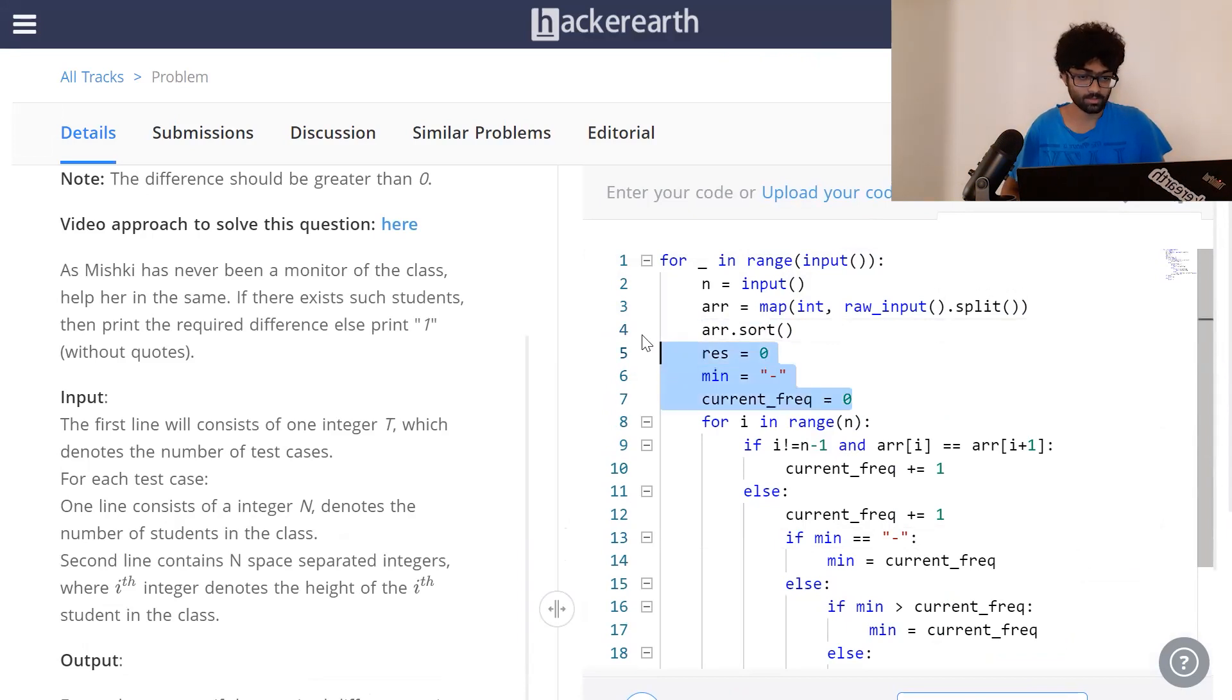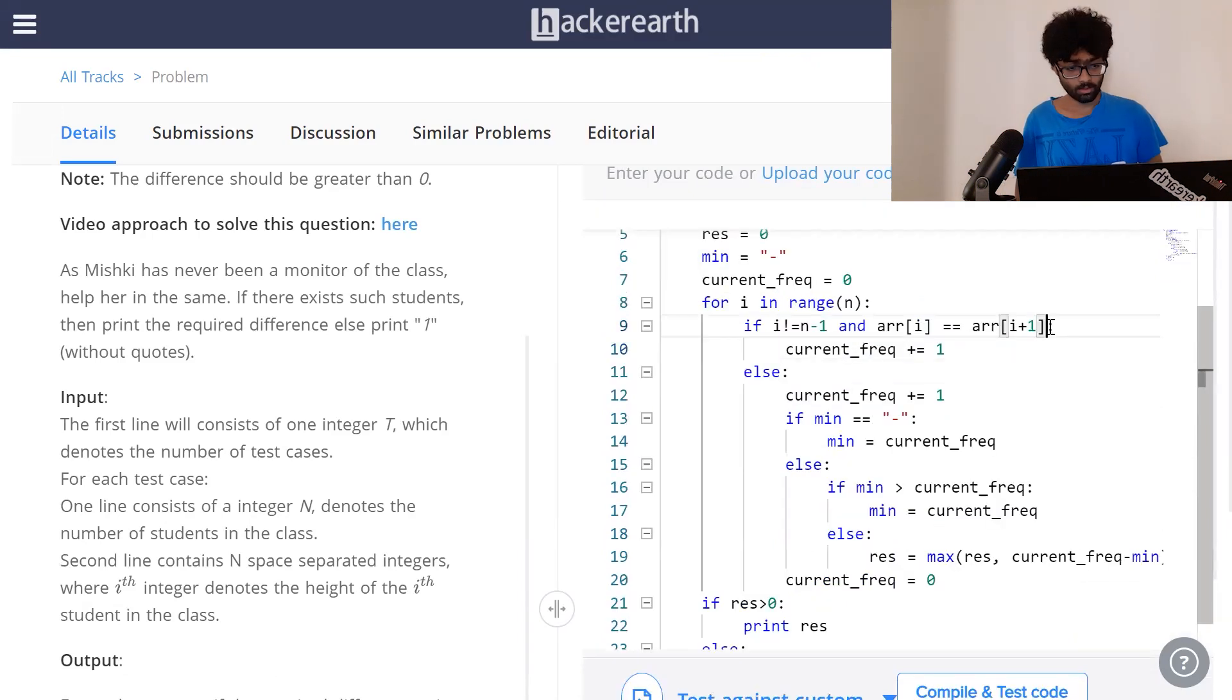These are our 3 golden variables, result, min and current frequency. If ARR of i is equal to ARR of i plus 1, we increase our current frequency. Furthermore, i can't be n minus 1. That's because we can't compare the last element with its successor. There's nothing else to compare it with.